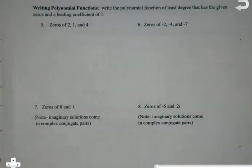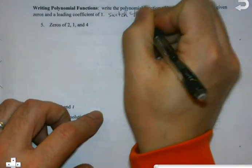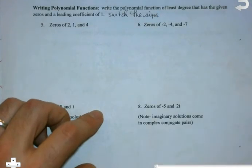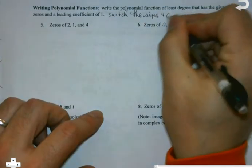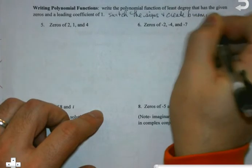So we can go both directions, sort of like when you foil something out and then you factor it. Same difference is going on here. So here's how this is going to work. When you're trying to write these, when they give you the zeros, what you have to do is switch the signs and create binomials.